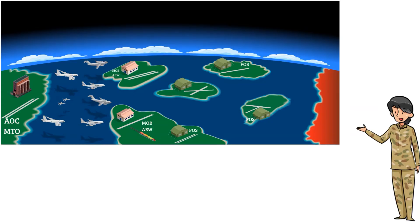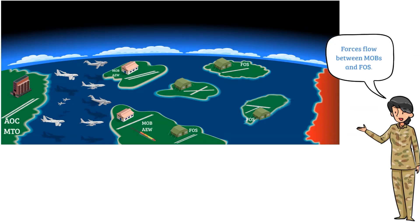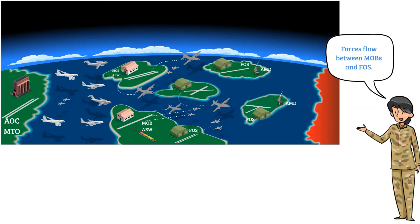Depending on the operational situation, forces will flow back and forth from main and forward sites, relying on airlift and logistical flows. In a perfect scenario, all of these are covered by air and missile defense, typically provided by the Army.